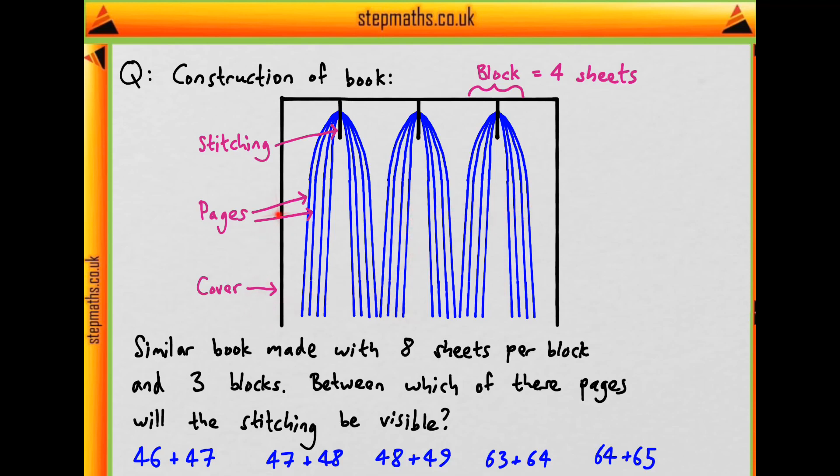And so these are our pages, and the stitching, this black thing, holds the pages together in these blocks, each containing four sheets. And so each sheet is folded once across here to give eight pages total per block. And this is the cover of the book.